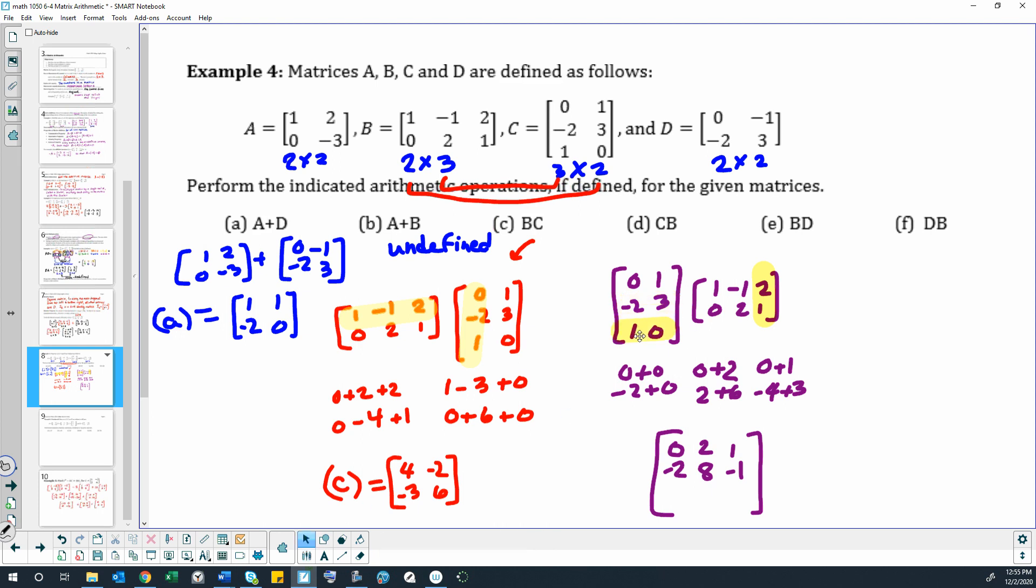Then we have negative 2 times 2, which is negative 4, 3 times 1, which is 3. Alright. And then last, this one down here and this one over here. So 1 times 1 is 1 and 0 times 0 is 0. 1 times negative 1 is 0. And last but not least, 1 times 2 is 2, 0 is 2. This is the answer to part D. So B times C, C times B, both are doable, completely different answers.